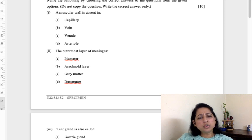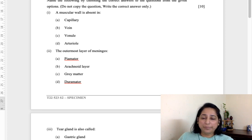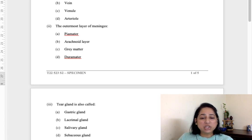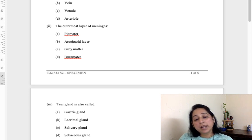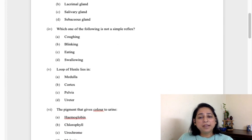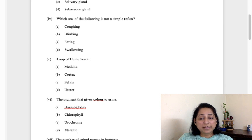Section A, attempt all questions. These are MCQs so I'll quickly take you through them. Muscular walls are absent in capillaries. Outermost layer of meninges - the coverings of the brain are known as meninges. Its sequence is arachnoid, pia mater, dura mater, so the outermost would be the dura. Tears are also known as lacrimal glands.